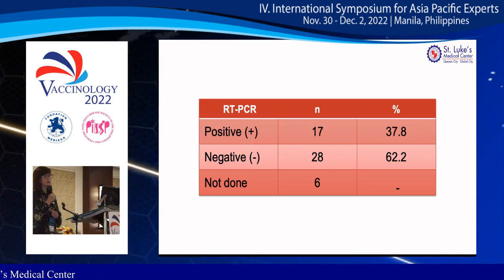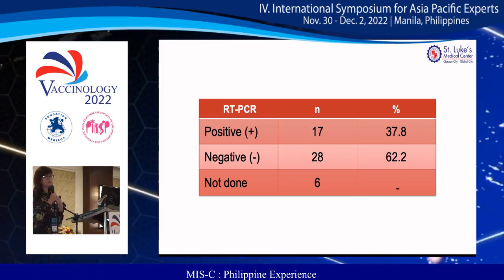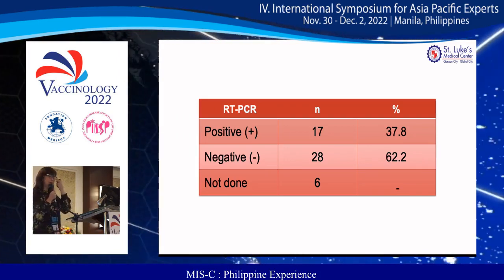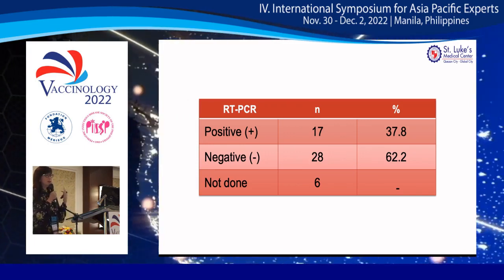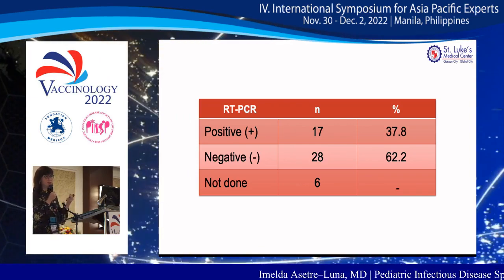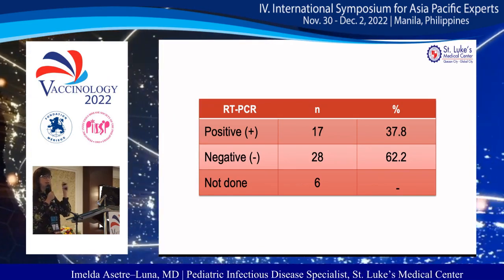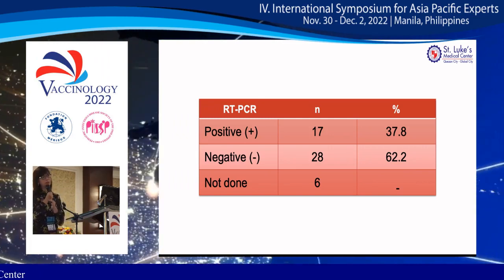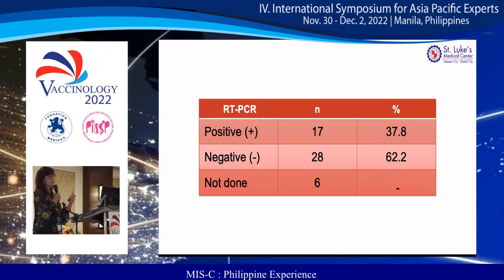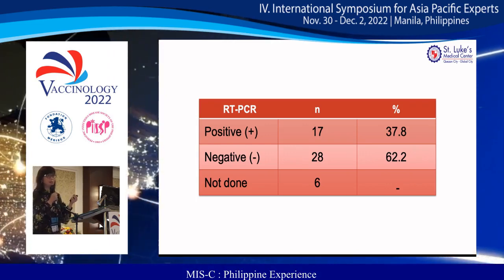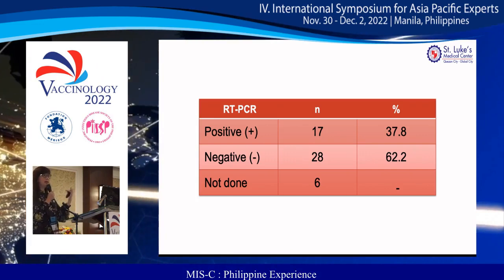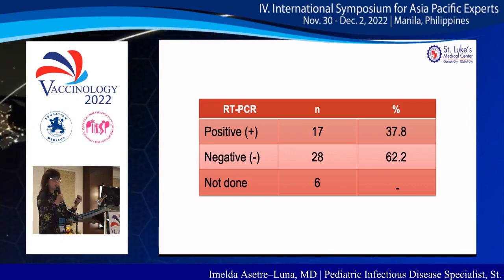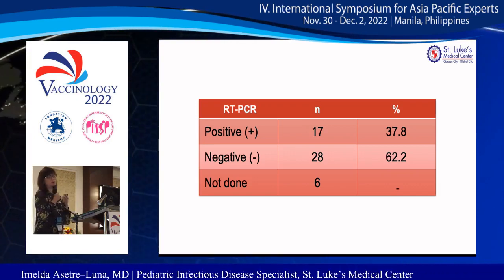Quite a number were still positive for RT-PCR, although the majority were negative. Initially there was confusion about where to place RT-PCR positive MIS-C cases. We decided that if you are RT-PCR positive with no respiratory symptoms and a positive IgG, you can be placed in the non-COVID ward. But if you are RT-PCR positive with respiratory symptoms, you still go to the COVID ward.